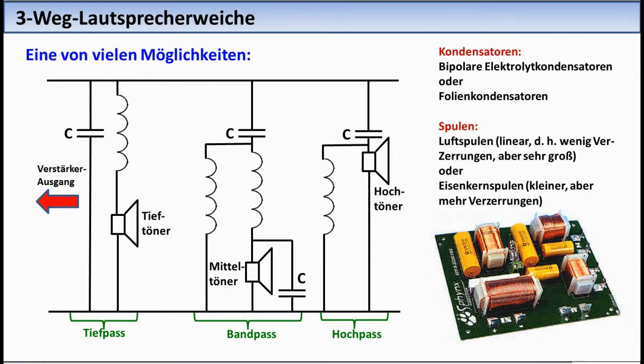Here is a three-way speaker crossover that divides the frequency range into three areas. First, the bass range for the woofer. The coil only lets low tones through, the capacitor short-circuits the high tones. The midrange speaker is fed through a band-pass, and finally the tweeter, which is fed via a high-pass. The capacitor lets the high tones through, and the coil short-circuits low tones.